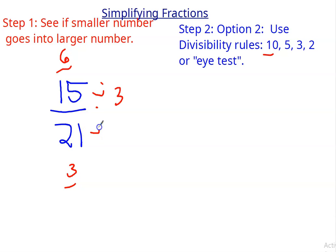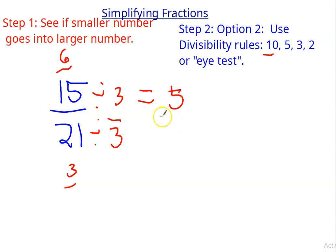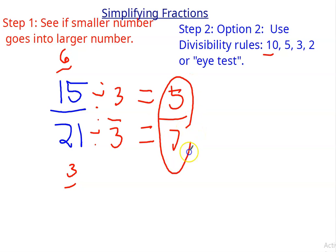Divided by 3. 15 divided by 3 is 5. 21 divided by 3 is 7. So 5 sevenths. Nothing else is going to work. So 5 sevenths is the answer.